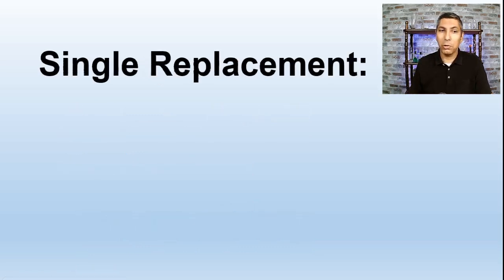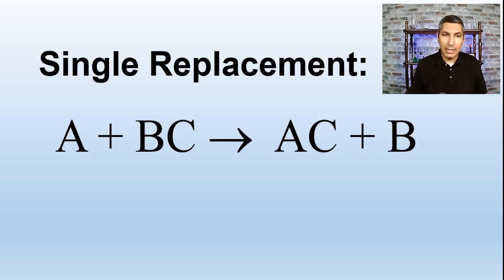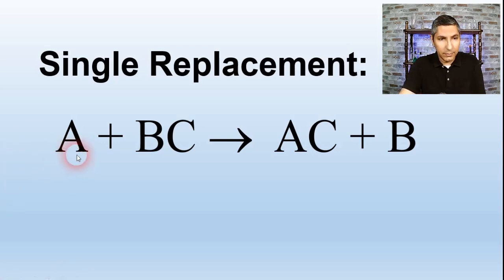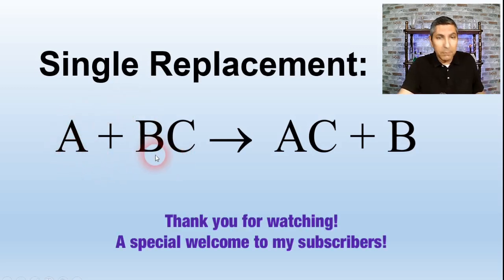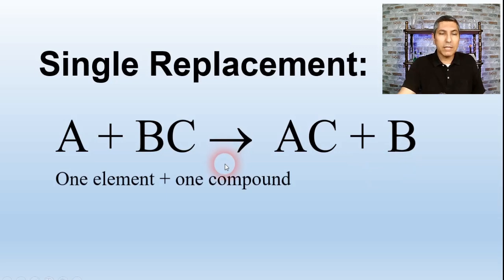The third type of chemical reaction is called single replacement — some textbooks call this single displacement, which is the same thing. The essential format is: A plus BC yields AC plus B. Here, A is an element and BC is a compound. A literally kicks out B and takes B's partner C. In a single replacement reaction, you always have one element plus one compound as the reactants, and that element kicks something out of the compound.